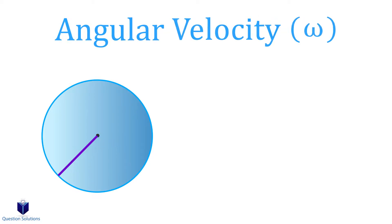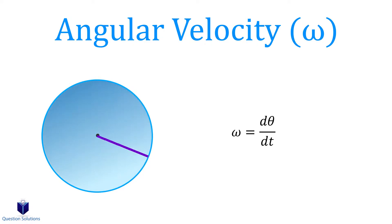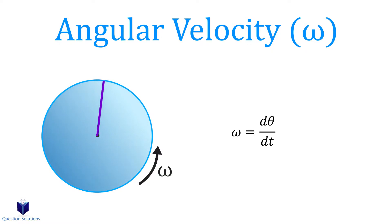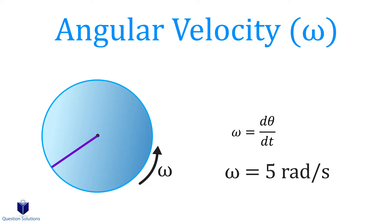Now let's talk about angular velocity. Angular velocity is the derivative of angular position with respect to time — in other words, it's the change in angle over time. We show the angular velocity using the Greek letter omega. It's usually measured in rads per second. So for example, if we have a disk spinning, we say it has an angular velocity of 5 rads per second.